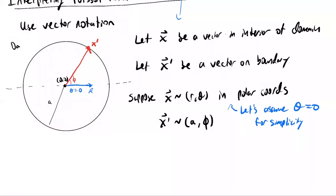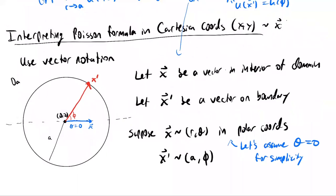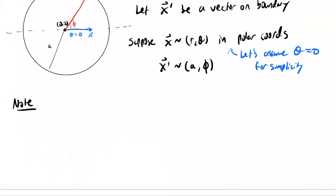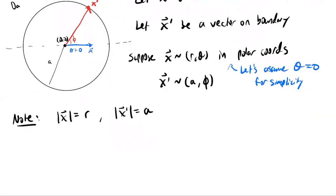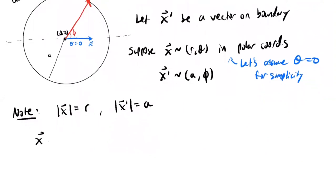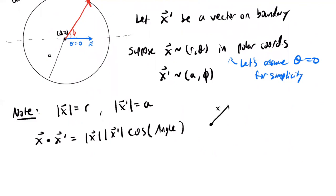Let's first do some preliminary calculations. By definition, the r parameter is the length of x, and the a parameter is the length of x prime. So the length of x equals r, and the length of x prime, which is on the boundary, equals a.